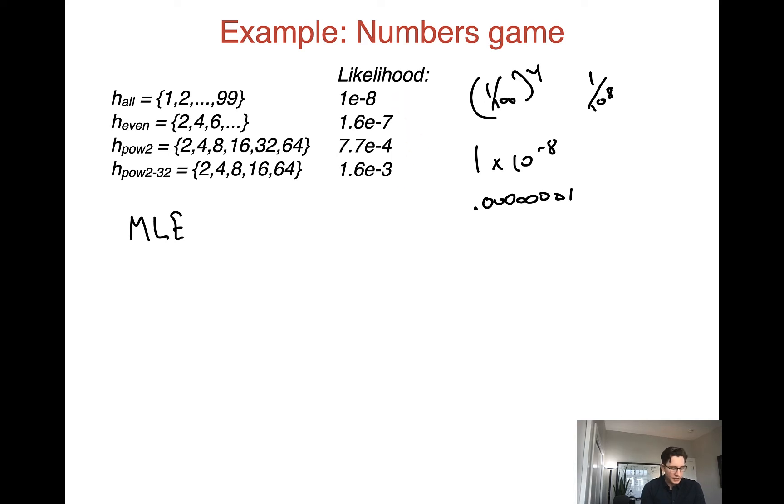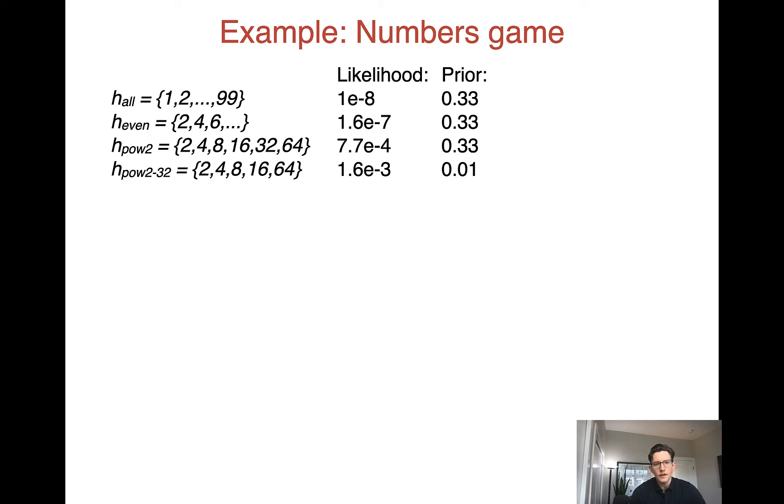Well, it's the maximum of these likelihoods. So that is H pow 2 minus 32. Again, note that the likelihood is just going to consider all these hypotheses equivalently. We might think that pow 2 is a better hypothesis, but clearly pow 2 minus 32 has a higher likelihood because it has fewer values in it, and 32, the value that it doesn't have, is not observed in our dataset. Of course, intuitively, that seems like the wrong conclusion because, again, powers of 2 seem as much more reasonable to us.